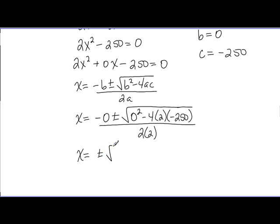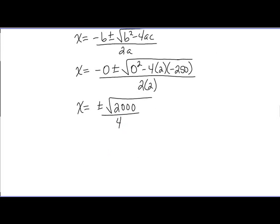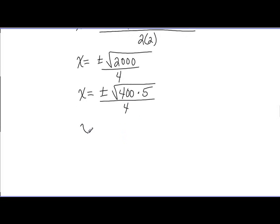Which we don't want to leave that way, technically it's correct, but 2,000 does have a perfect square that's a factor. Here we can rewrite 2,000 as 400 times 5. So 20 square roots of 5 divided by 4. 4 divides into 20 five times. So plus or minus 5 square roots of 5 would be your final answer.